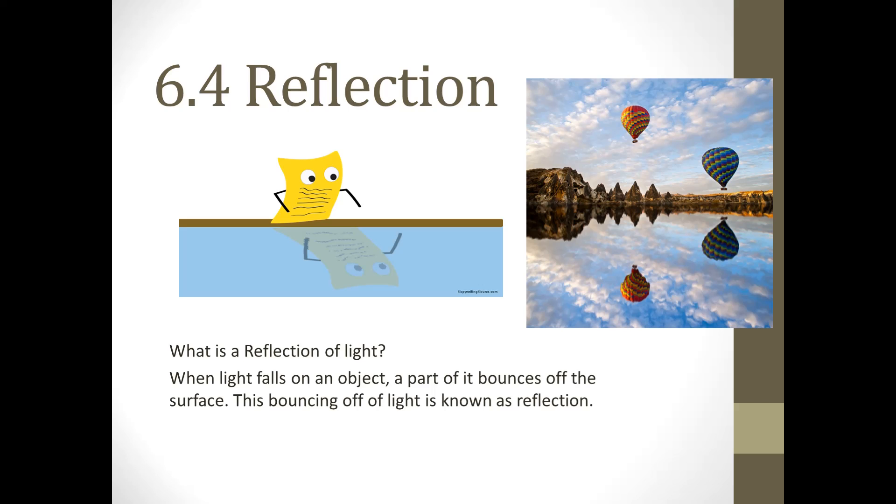This light hits the object and reflects to our eyes. So what is a reflection of light? When light falls on an object, a part of it bounces off the surface. This bouncing off of light is known as reflection.